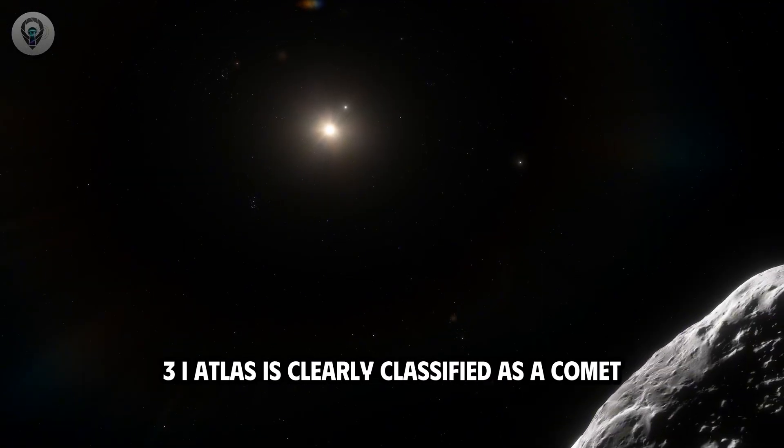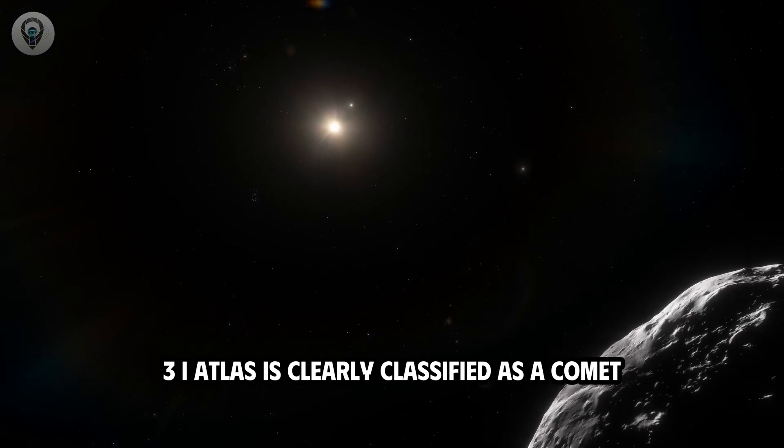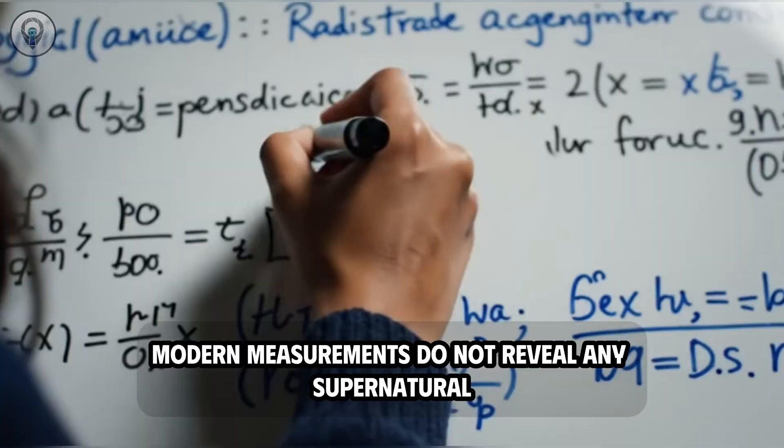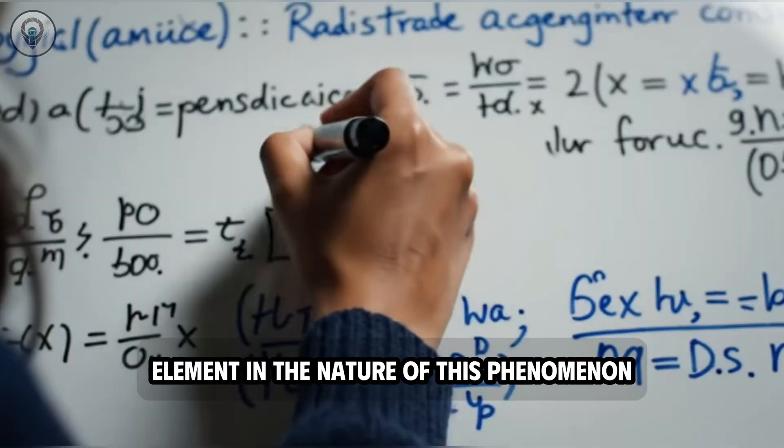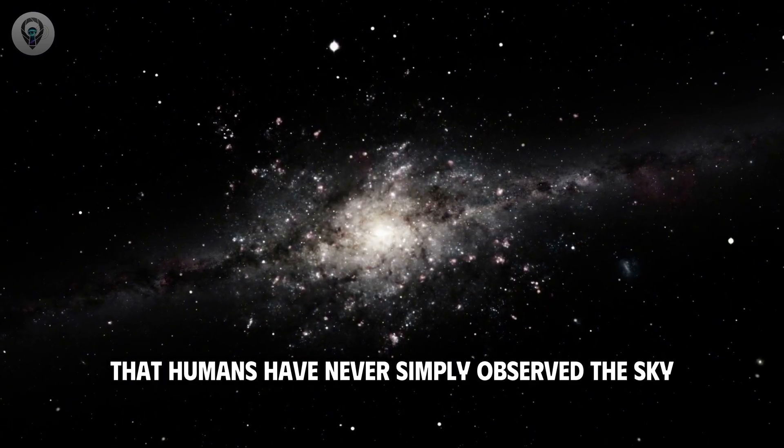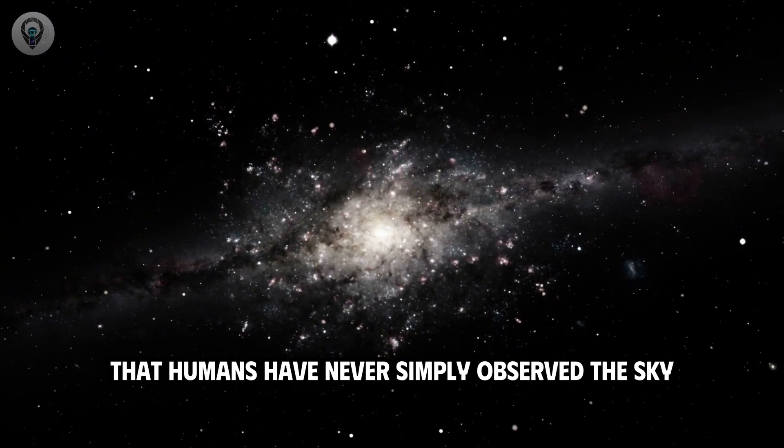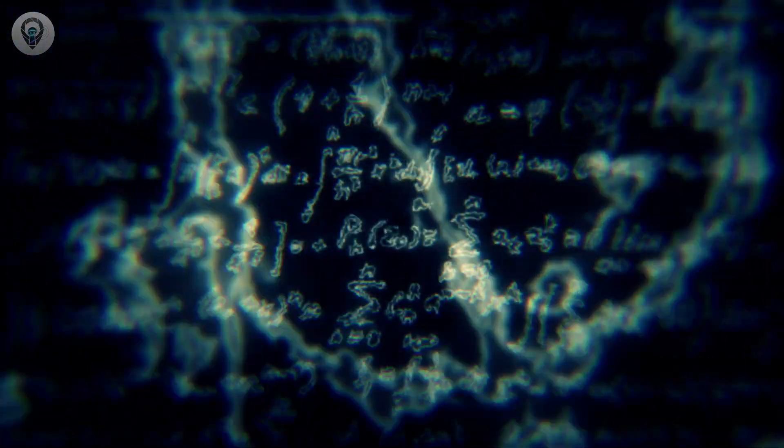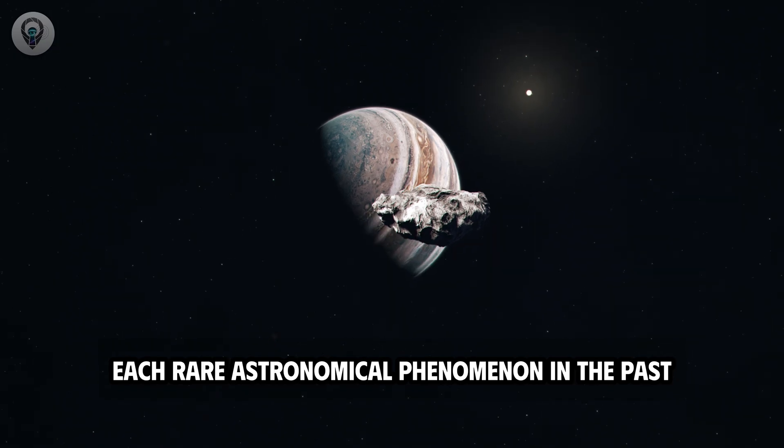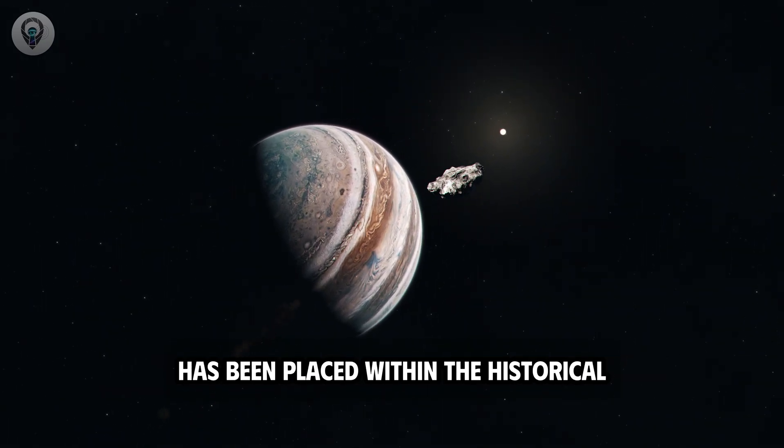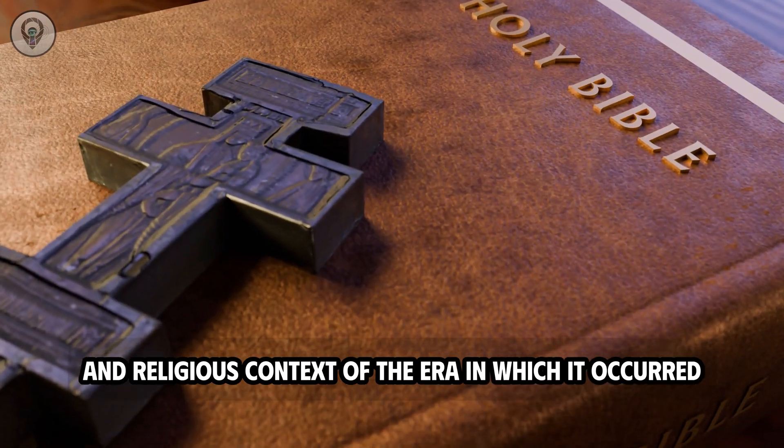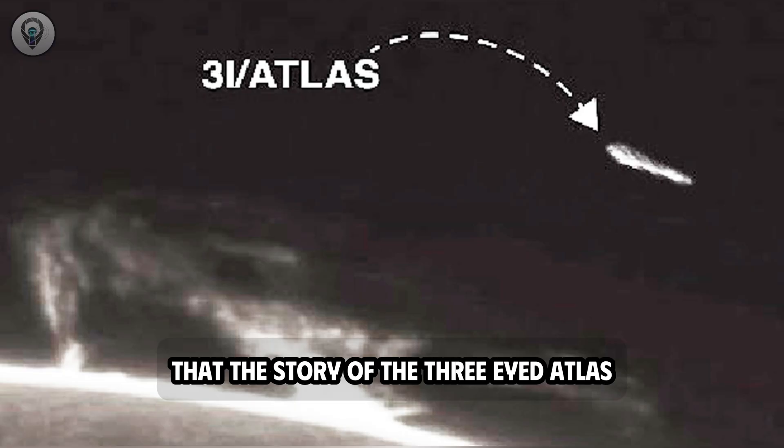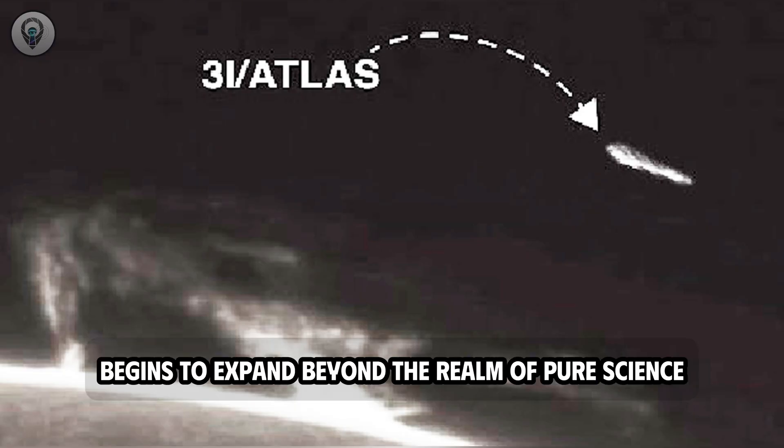From a scientific perspective, 3i Atlas is clearly classified as a comet and follows known laws of physics. Modern measurements do not reveal any supernatural element in the nature of this phenomenon. However, history shows that humans have never simply observed the sky through telescopes. Alongside precise numbers and computational models, each rare astronomical phenomenon in the past has been placed within the historical, cultural, and religious context of the era in which it occurred. It is at this point of intersection that the story of the 3i Atlas begins to expand beyond the realm of pure science.